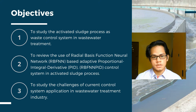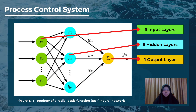Hi, my name is Noor Shahira and I will explain the process control system. The performance of the proportional integral derivative (PID) and the radial basis function neural network based adaptive PID (RBF-NPID) have been tested and observed. The structure of the RBF neural network used is 3-6-1, meaning three nodes for the input layer, six nodes for the hidden layer, and one node for the output layer. The tuning parameters for both controllers are constant: kc equals 5, ti equals 1, and td equals 0.5. The learning rate is set at 0.2, the momentum factor at 0.05, and the sampling period at 0.001 seconds.